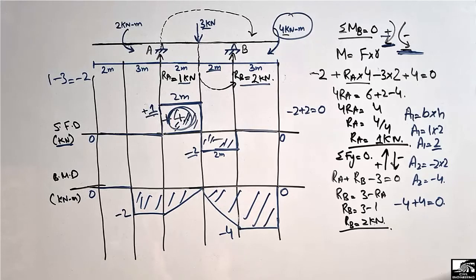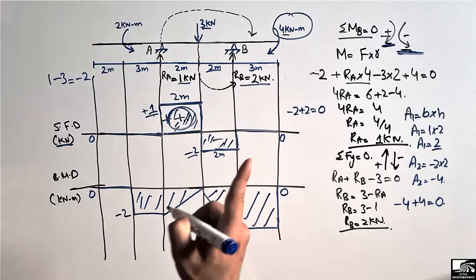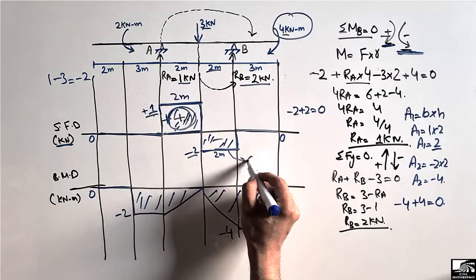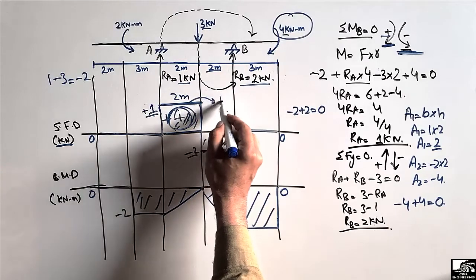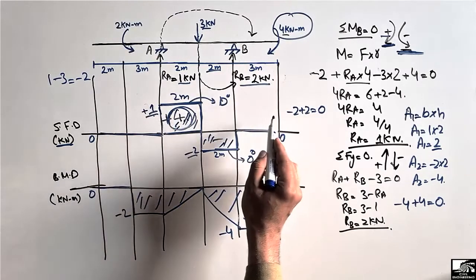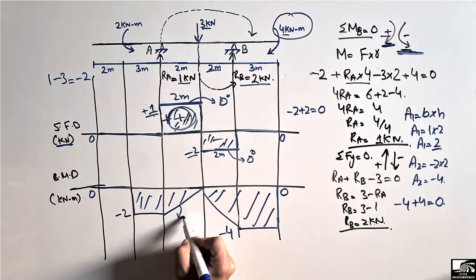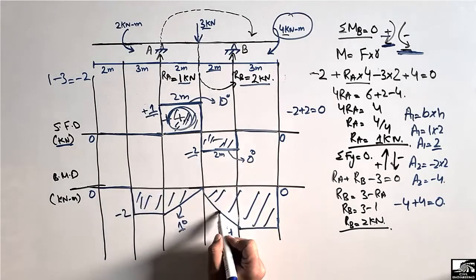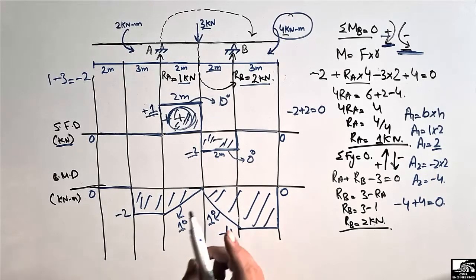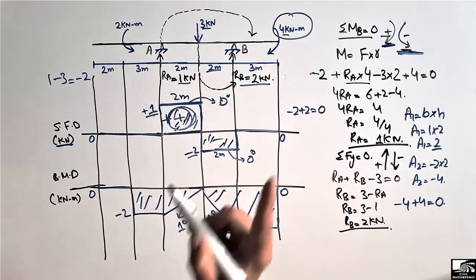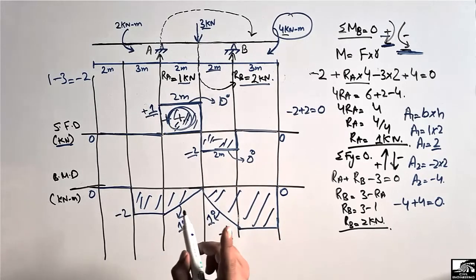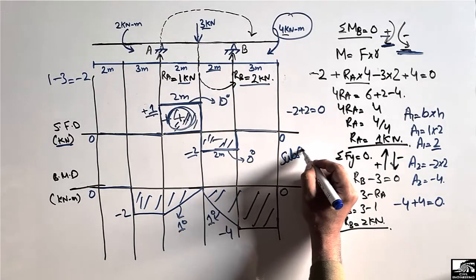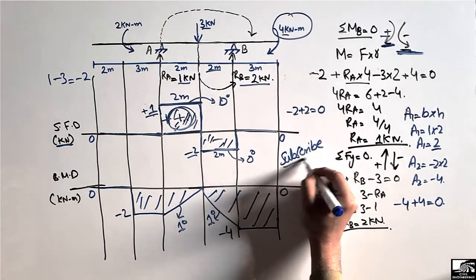It should be noted that when the shear force diagram is of 0 degree (a horizontal line), the bending moment diagram will be of 1 degree (a linear line). The bending moment diagram is always one degree greater than the shear force diagram. This completes the shear force and bending moment diagram for this overhanging beam. Please subscribe to the channel for more civil engineering videos.